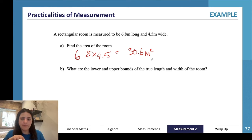Now the second part of the question is a little bit more complicated. What are the lower and upper bounds of the true length and width of the room? So we need to work out the true length and width and their lower and upper bounds from 6.8 and 4.5. So they both have the same absolute error, which is 0.1 meters.